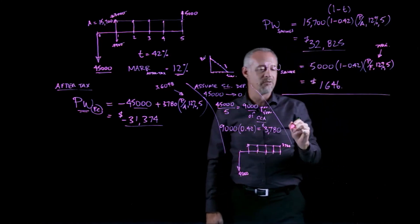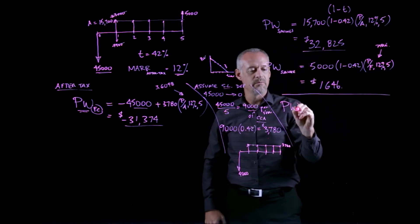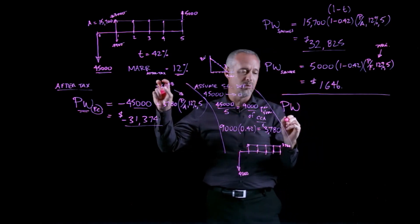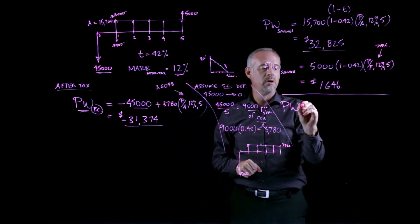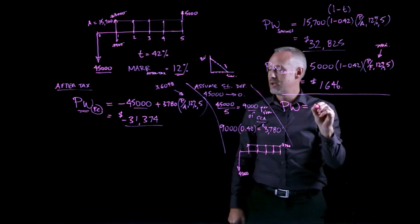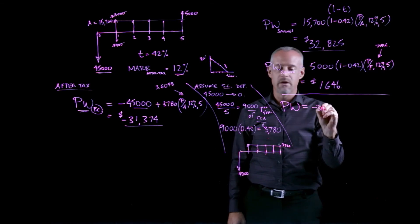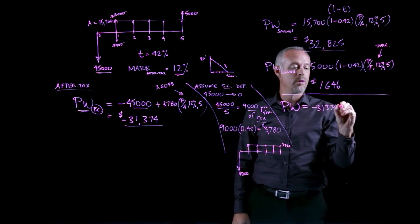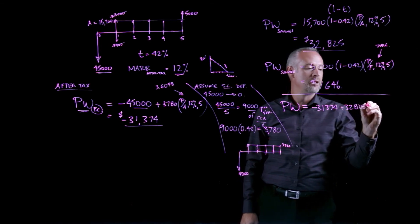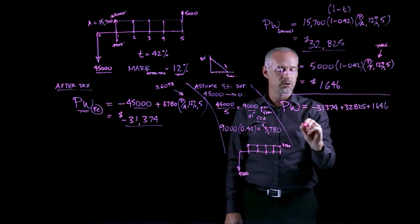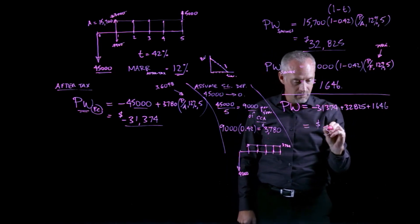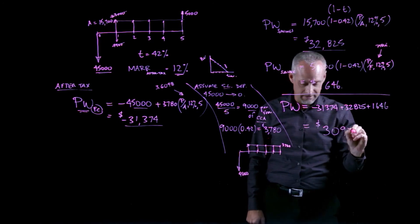The last thing remaining for us to do is to find the total present worth. So the total present worth of the purchase of this tester equipment is going to be the sum of all of these other cash flows. So I'll just write it out quickly. So my minus $31,374 plus $32,825 plus $1,646. I should get a present worth equal to $3,097.